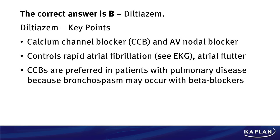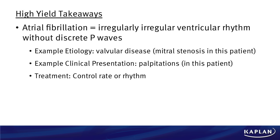Some high-yield takeaways for this question: know about atrial fibrillation. Number one, know what it is; and two, be able to recognize that EKG. It's an irregularly irregular ventricular rhythm without discrete P waves. An example of what can cause it? Mitral stenosis — any sort of valvular disease. If we have mitral stenosis, that left atrium over time is going to enlarge. That's going to affect the conduction system and lead to AFib. A lot of problems in this patient.